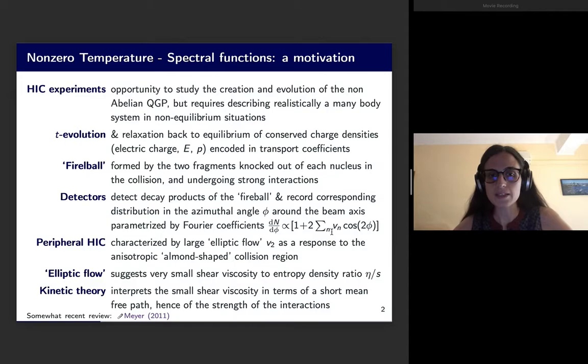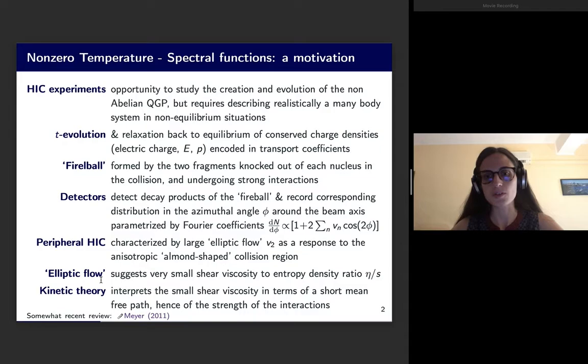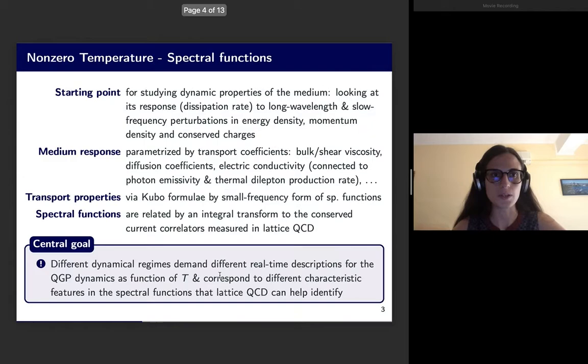What that suggests is that the fluid we are looking at behaves as an almost perfect fluid with a very small shear viscosity to entropy density ratio, indicated by η over s. Kinetic theory, which is one of the theories used to interpret what happens after the collision, interprets this small value of the shear viscosity in terms of a short mean free path of the particles and therefore the strength of the interaction. You can click on the link to get to a recent review about this subject.